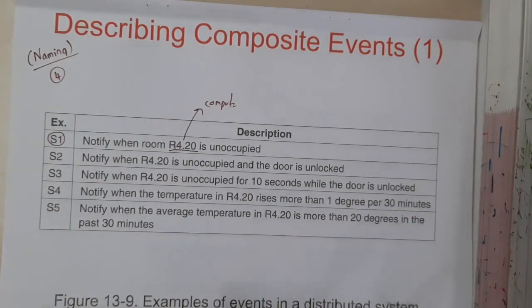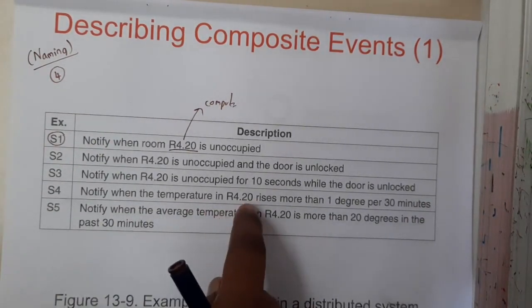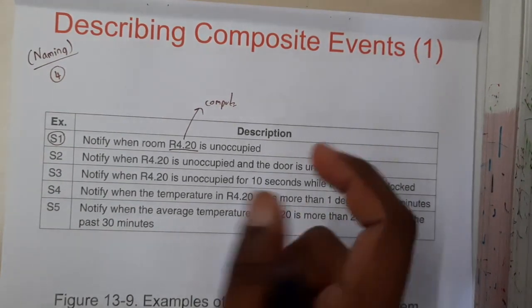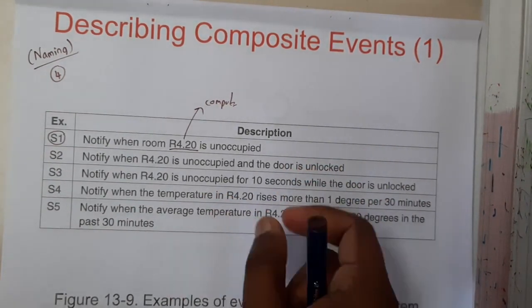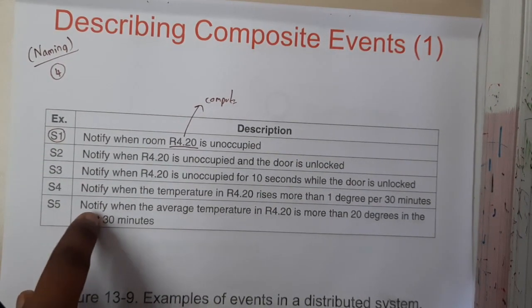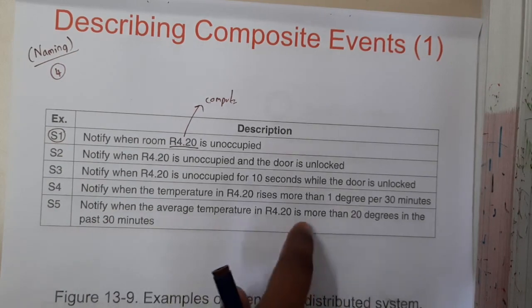Similarly, S4 notifying when the temperature of R4.20 rises more than 1 degree per 30 minutes. For every 30 minutes, if the temperature is increasing by 1 degree, then you will be notifying. Similarly, S5 is notifying the average temperature in the room is more than 20 degrees in the last 30 minutes.